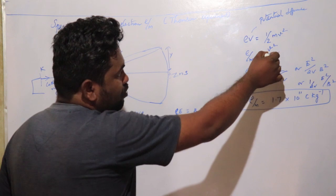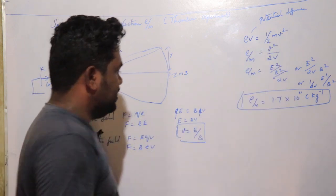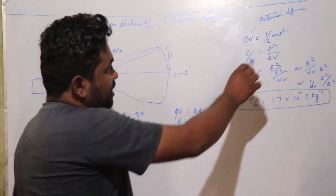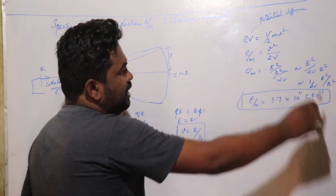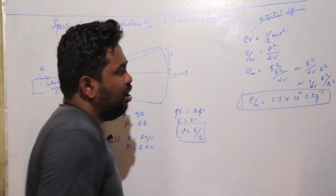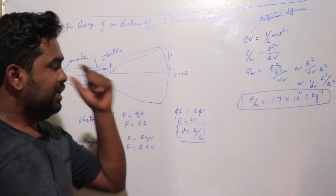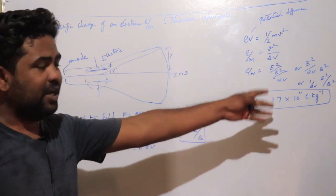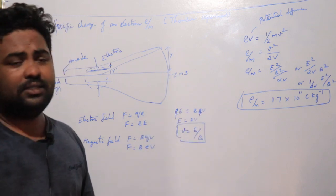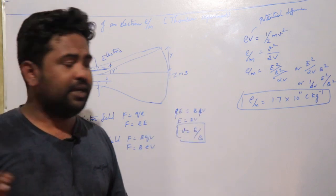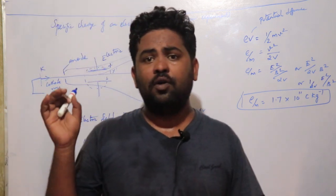Velocity is equal to E divided by B. Substituting, e by m equals E squared divided by B squared times 2V. All quantities — the electric field, the magnetic field, and the potential — are known values. So the specific charge of an electron is 1.7 times 10 to the power 11 coulombs per kilogram.